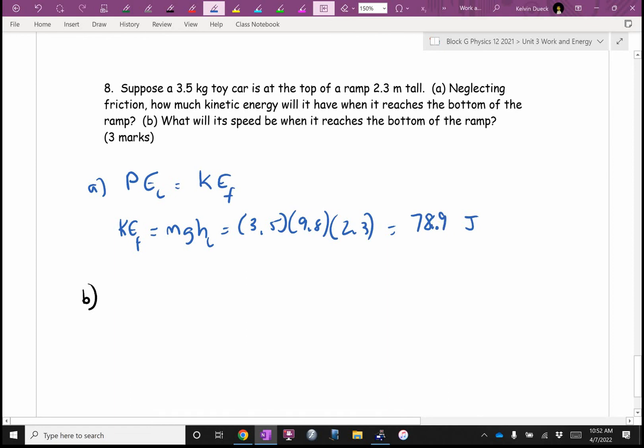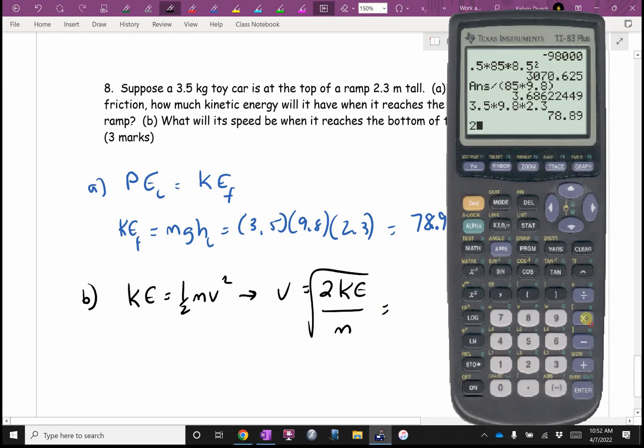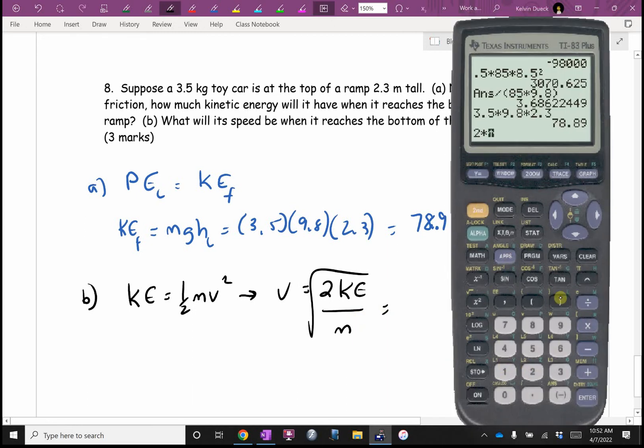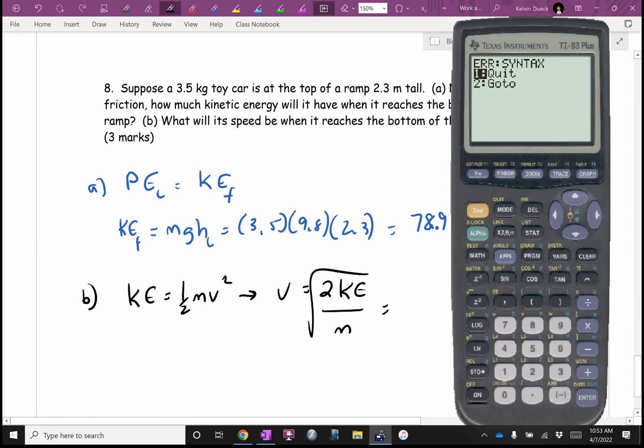B. What will the speed be? Okay. Well, I guess kinetic energy is going to be a half mv squared. So v is going to be 2 times the kinetic energy divided by m. It's going to be 2 times the answer button divided by what was m, 3.5. And then square root of that. 6.71.